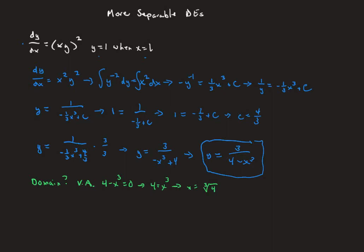The solution to this differential equation can only be valid to the right of x = ∛4 or to the left of x = ∛4. We go back and look at our initial condition: y = 1 when x = 1. Since the cube root of 4 is greater than the cube root of 1, which is 1, our initial condition lands to the left of the vertical asymptote. So our solution is only valid on that part of the domain — that is, x less than the cube root of 4.